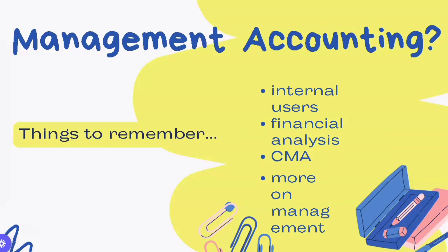Graduates of BSMA, or Bachelor of Science in Management Accounting, can become a Certified Management Accountant, while graduates of BSA, or Bachelor of Science in Accountancy, related to financial accounting, can obtain a license as a Certified Public Accountant. That is the primary difference between financial and management accounting.